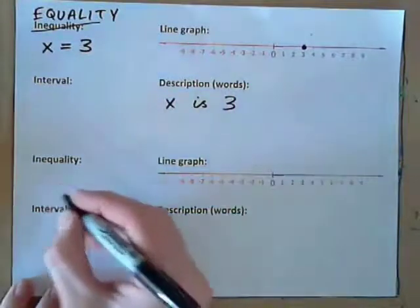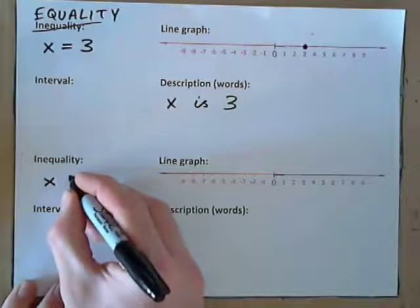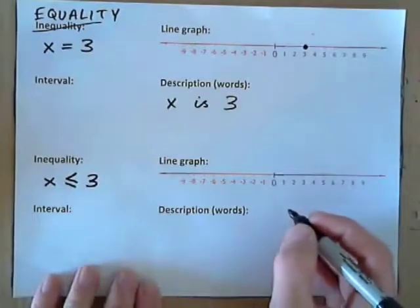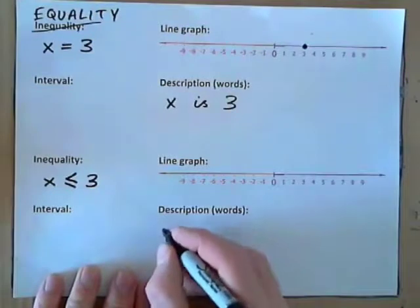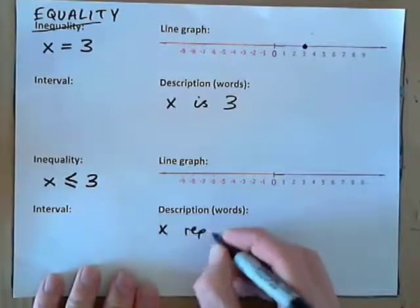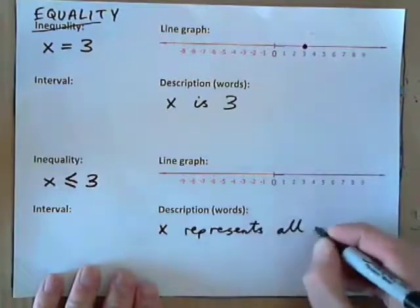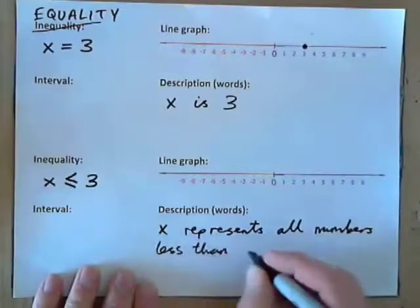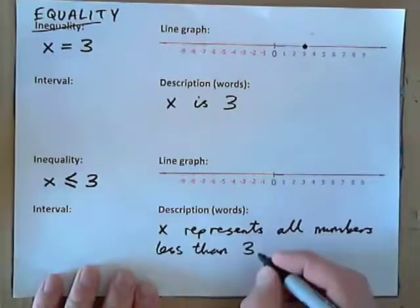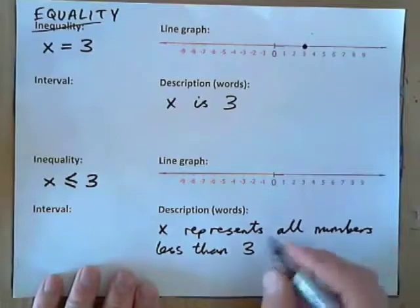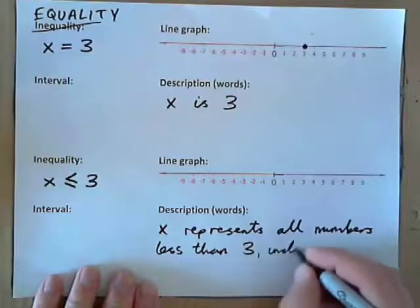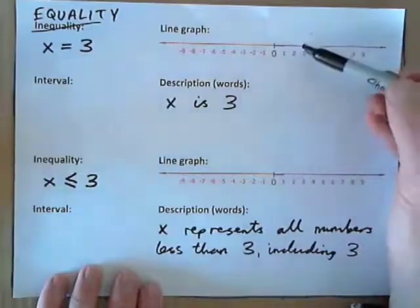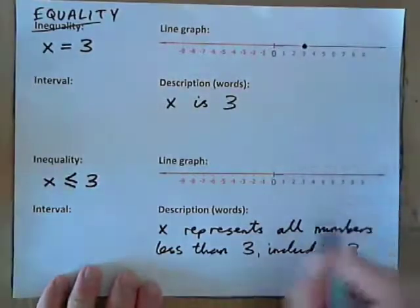Now, an inequality would be something like this: x is less than or equal to 3. How would we describe that in words? x represents all numbers less than 3 and 3 — so, less than or equal to 3. All numbers less than 3 and, you could also say, including 3. So, x represents all numbers less than 3 including 3.